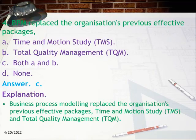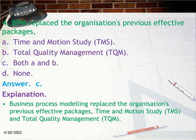Question 4: BPM replaced the organization's previous effective packages — A. Time and motion study (TMS), B. Total quality management (TQM), C. Both A and B, D. None. Answer: C, Both A and B. Explanation: Business process modeling replaced the organization's previous effective packages: time and motion study (TMS) and total quality management (TQM).